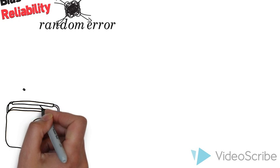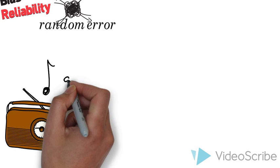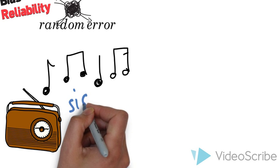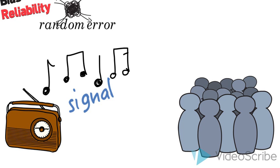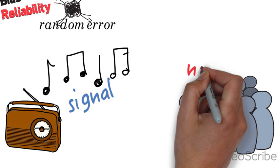Let's think of reliability as a signal-to-noise ratio, using listening to music in a crowded room as an example. The signal is the measure of the concept, like the music you're trying to listen to.